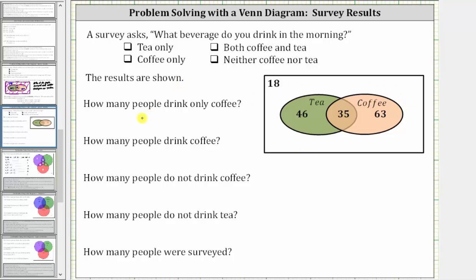The first question is how many people drink only coffee? Here we have the set of coffee drinkers, but we don't include these 35 because these 35 also drink tea. We're looking for the number of people that drink only coffee, and therefore 63 people only drink coffee.